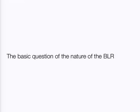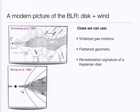Let me get to the more fundamental question of what is the nature of the broad line region. More modern ideas are based on clues from observations. As Brad Peterson showed, we think the motion of the broad line gas is virialized. The geometry may be flattened — reverberation mapping results suggest this, but the most recent results are tough to interpret. They suggest that the flattened geometry and the signature of a Keplerian disk are not universal, which is something we have to worry about.